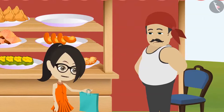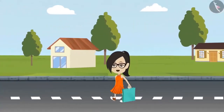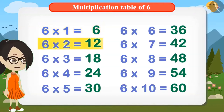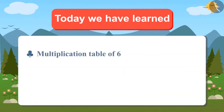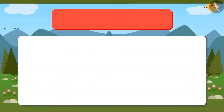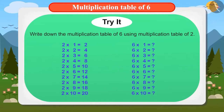Now I should go home quickly. Seeing these samosas, my mouth is watering. Come, let's remember the table of 6 now. Today you learned the multiplication table of 6 and also learned that multiplication tables of bigger numbers can be found out from multiplication tables of smaller numbers, just like Vandana figured out the multiplication table of 6 from the multiplication table of 3. You can try to find the multiplication table of 6 from the multiplication table of 2.